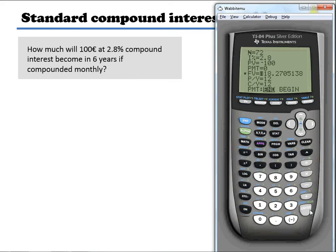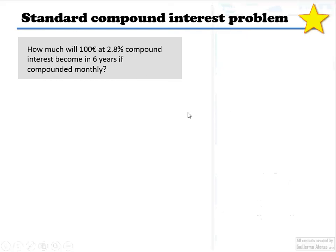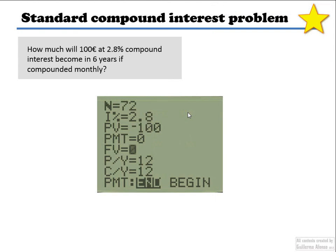Now those two often coincide. To solve it, you put the cursor over the one you want to figure out. In this case, it's future value. And you press alpha solve. Let's go through it slowly again.